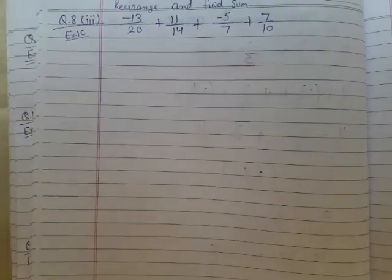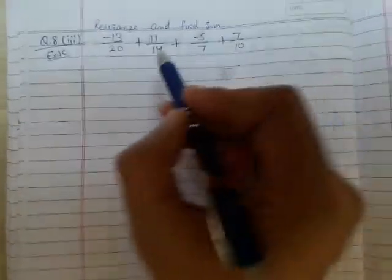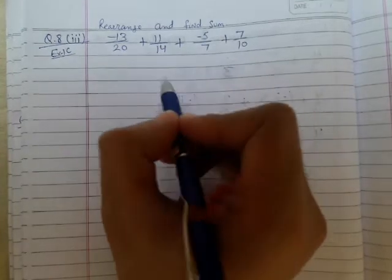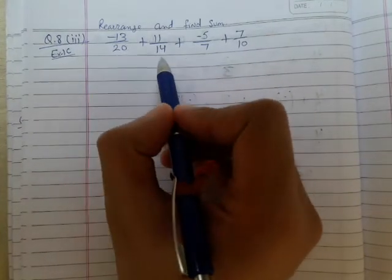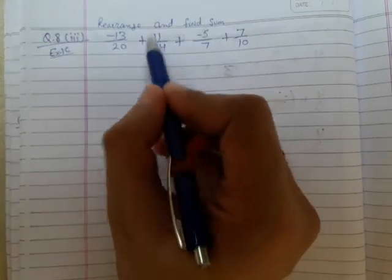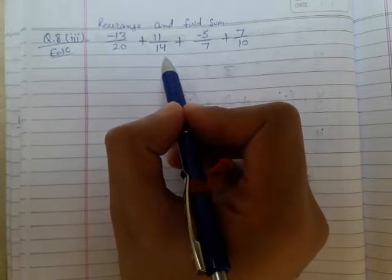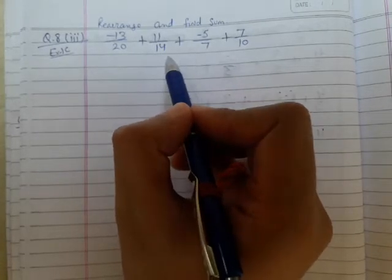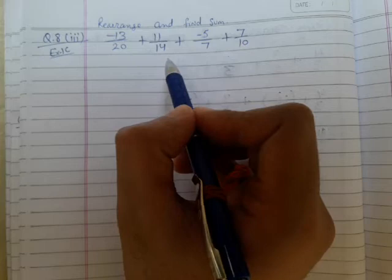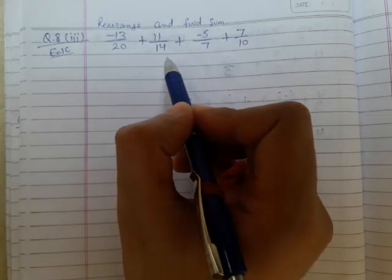Question number 8 part 3: Rearrange the rational numbers and find the sum. In this question, we will rearrange the rational numbers so that both denominators are the same or they are multiples of one another.